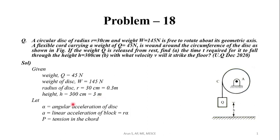Let alpha be the angular acceleration of the disk, A be the linear acceleration of the block, where A equals R alpha. R is the radius of the disk and let P be the tension in the cord.